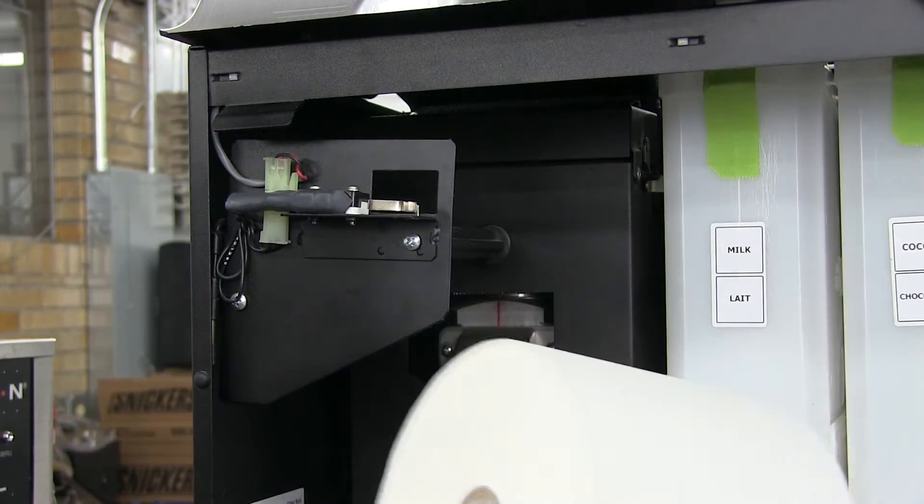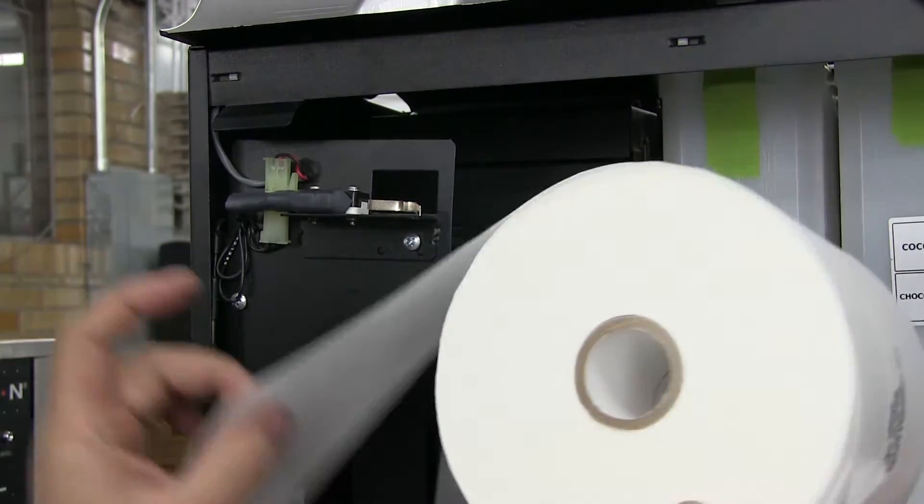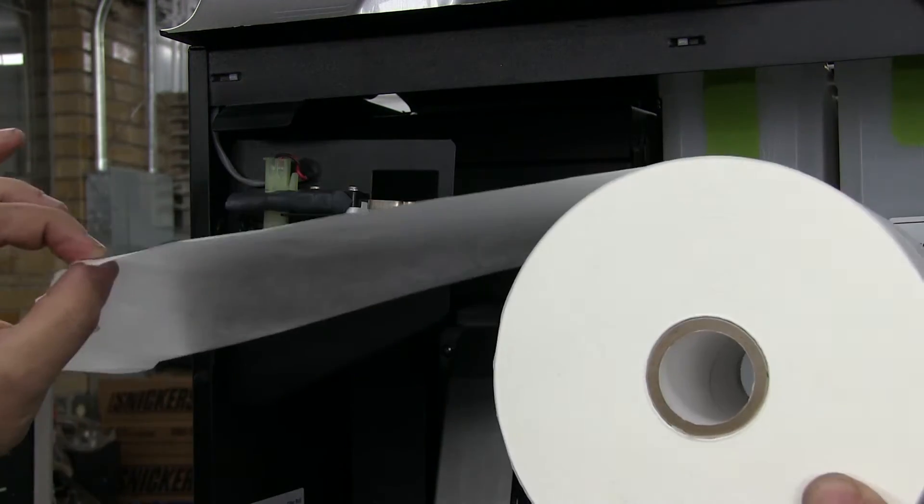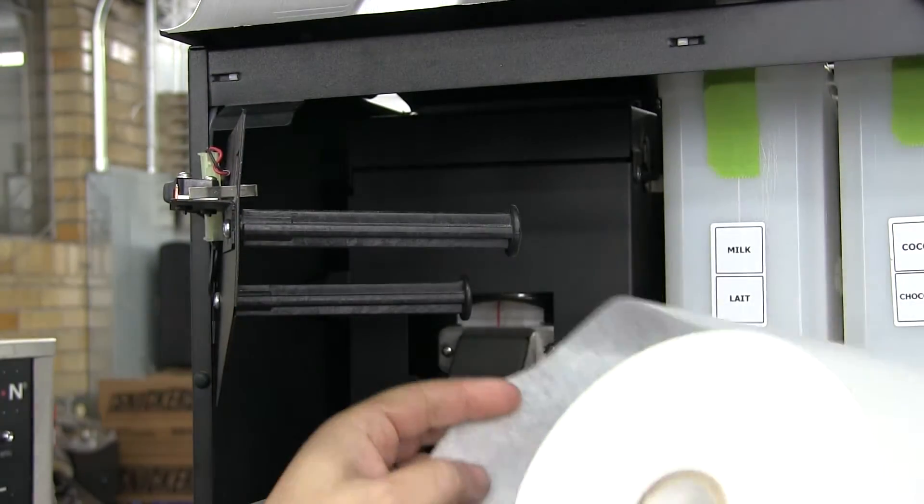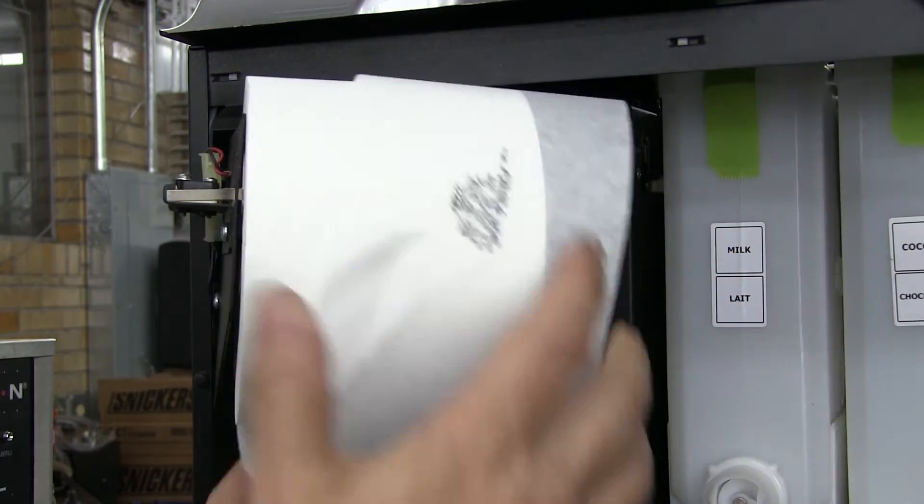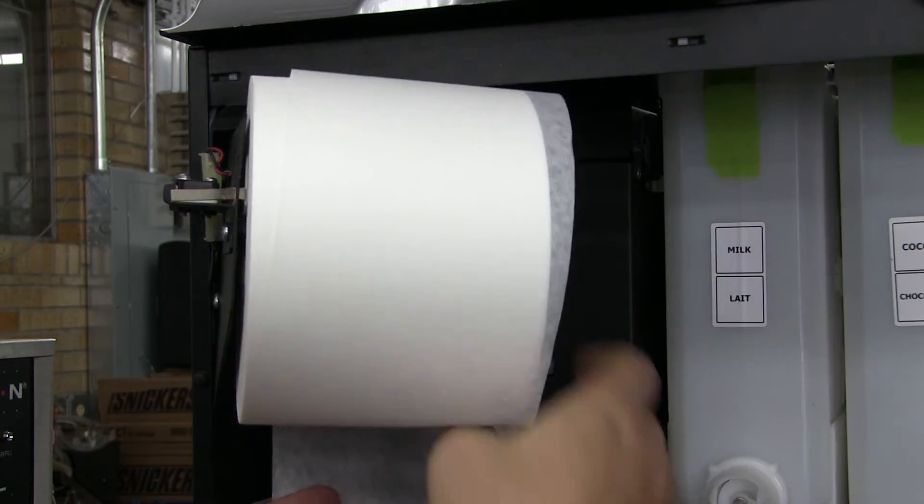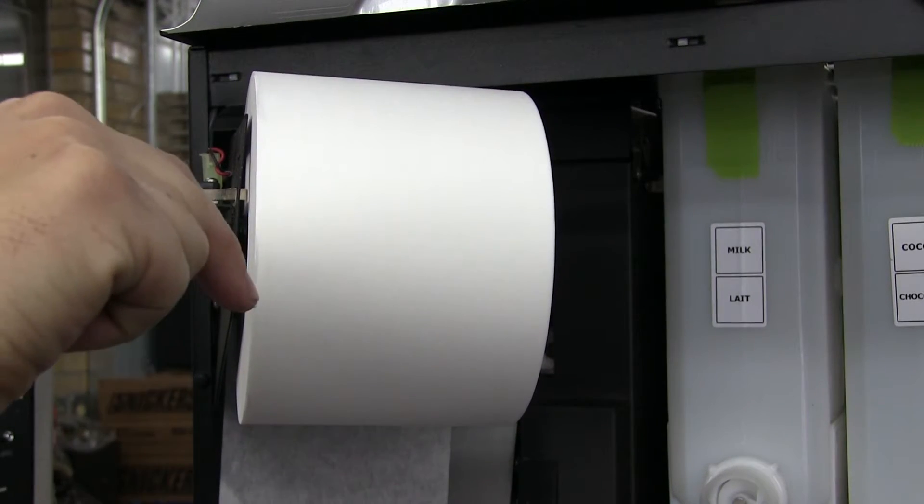When you start with a new roll, simply strip the plastic off and tear the paper. Make sure that the paper is going to the left of the machine. Rotate this holder out, put the paper over the back arm, slide the cardboard over the front arm, and then just pull down. The paper will thread on that back arm.